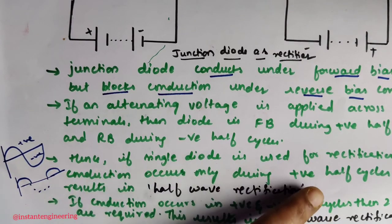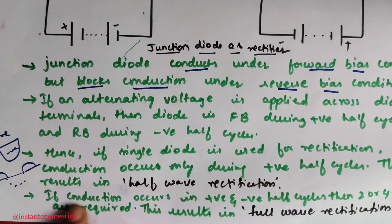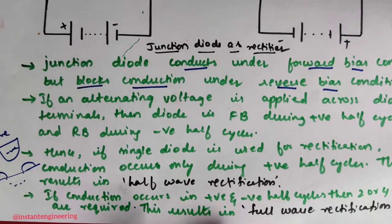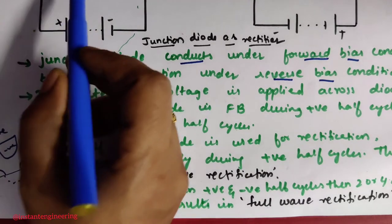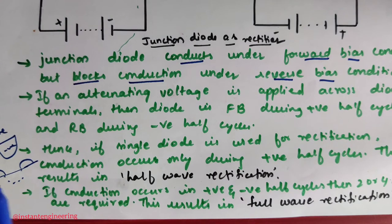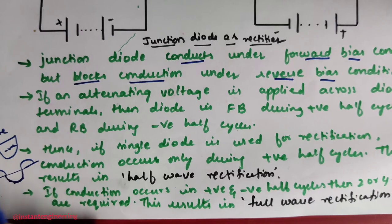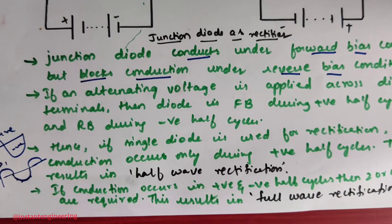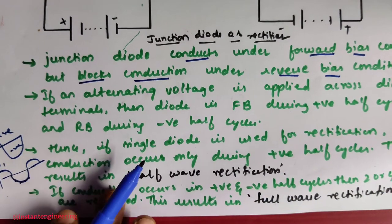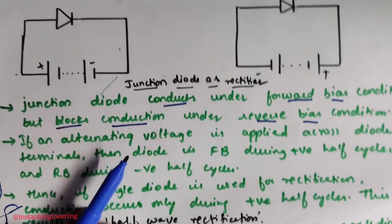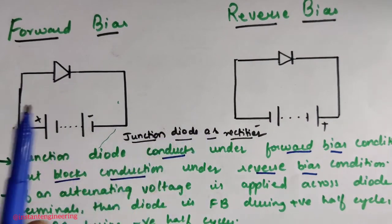If conduction occurs in both positive and negative half cycles, two or four diodes are used — this results in full wave rectification. For example, diode D1 conducts in one cycle, D2 in the next, and so on, forming a continuous sinusoidal-like wave. So half wave rectification uses a single diode, and full wave rectification uses two or four diodes. This is how a junction diode acts as a rectifier.